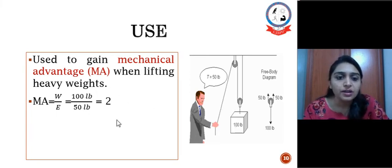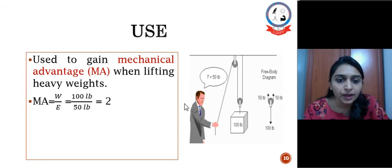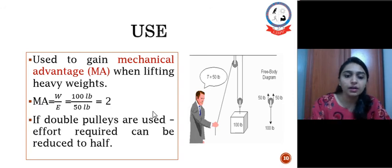So here is an easy example of mechanical advantage where we can say mechanical advantage is equal to weight upon effort. So weight here is 100 lb and effort being applied is 50 lb so it gives two, that is we are getting mechanical advantage.